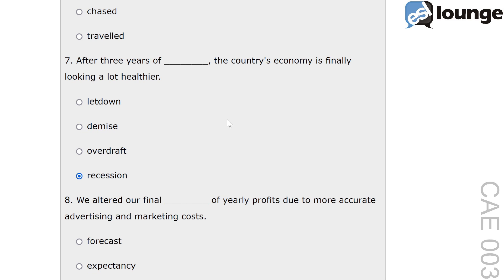The main distractor in this question is demise. It typically signifies a final and irreversible end, such as the demise of ancient civilizations. While demise means a complete cessation, in economic terms recession is more fitting as it describes not an end, but a downturn that is generally reversible and temporary.